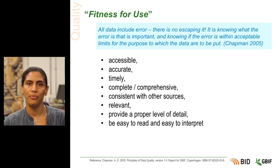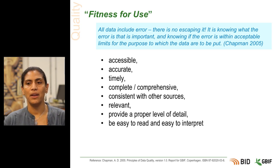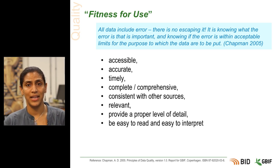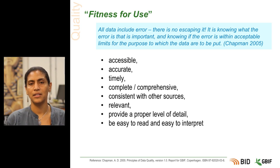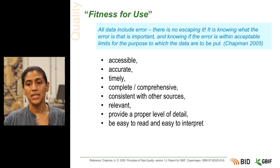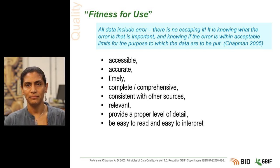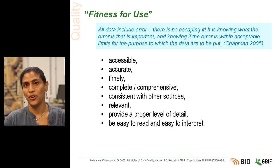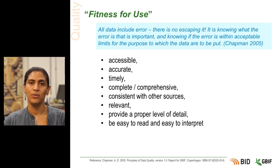Consistency — is the data in each field always the same? For example, are all dates in the format day, month, year? Relevancy is important: how similar is this dataset to others that have been used for the same purpose? Is it detailed? How much resolution is there in your data? For example, at what scale can it be used to map species distributions? Lastly, how easy is your data to read and interpret? Is the dataset documented in a clear and concise way? The key point here is: do you understand your data, and can you explain its purpose to someone else?